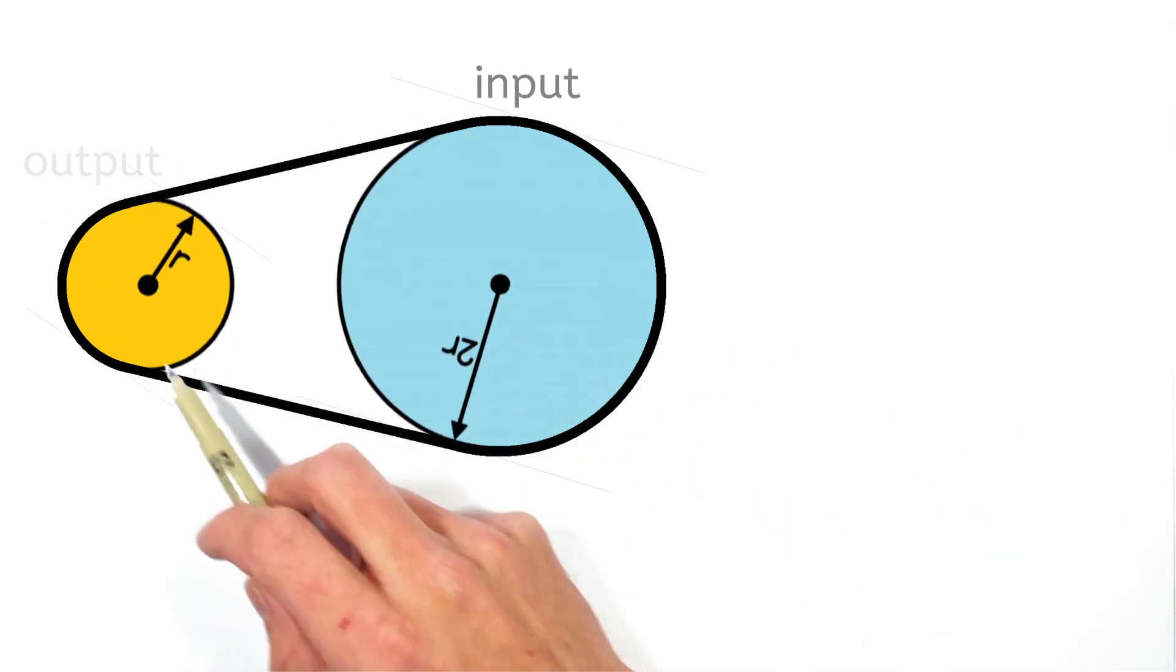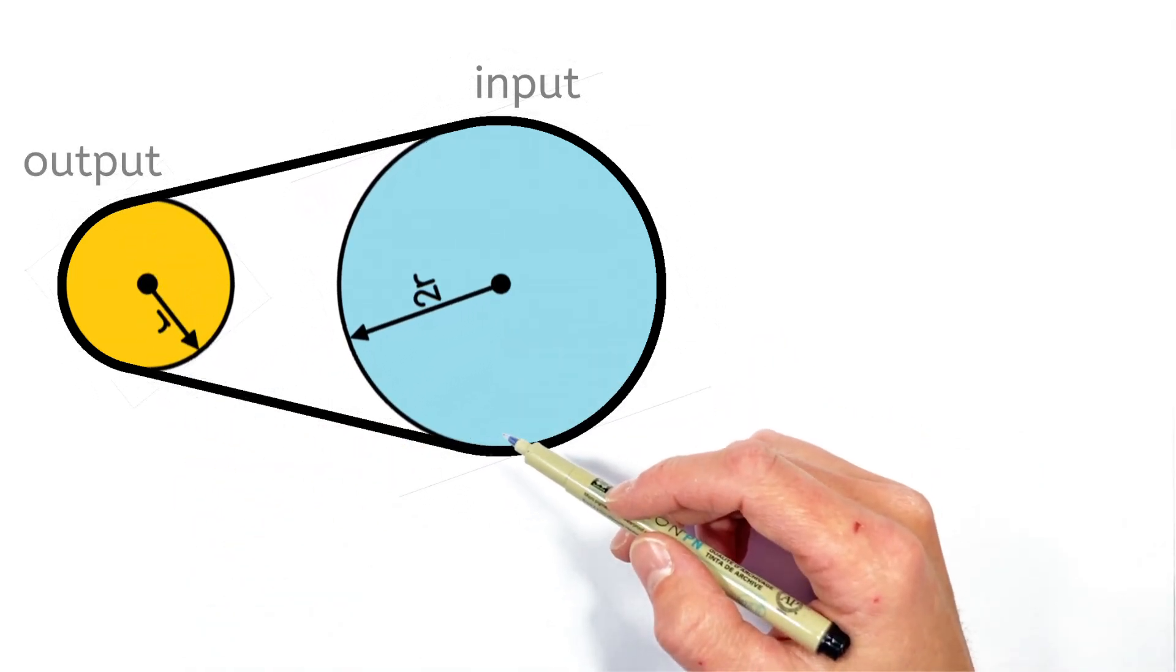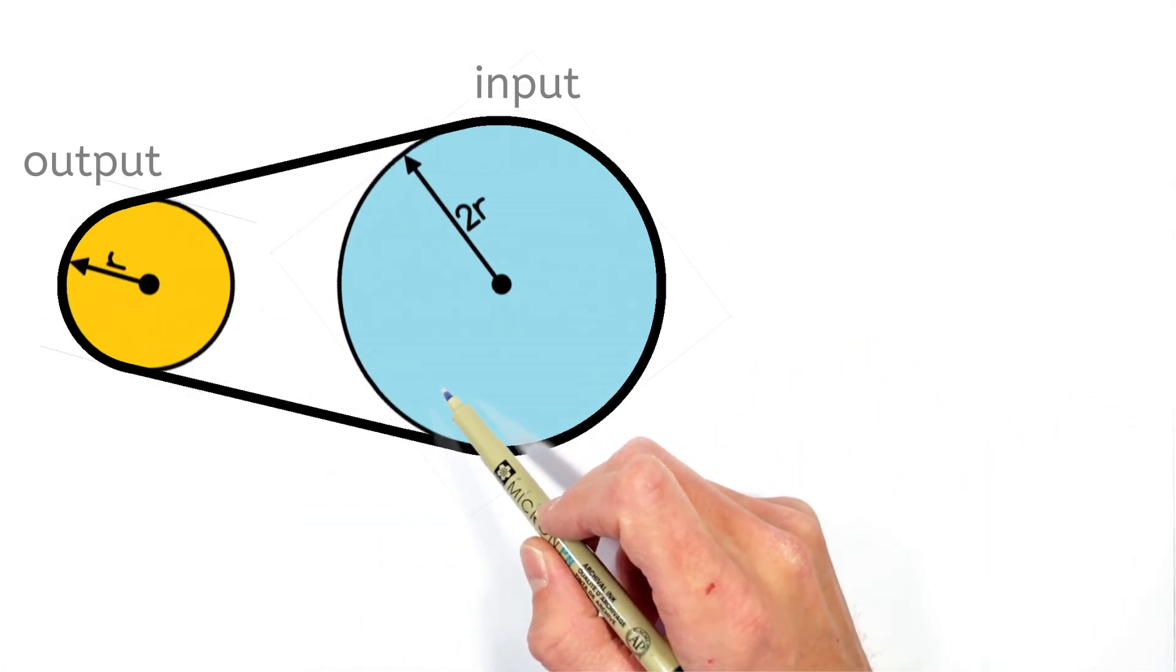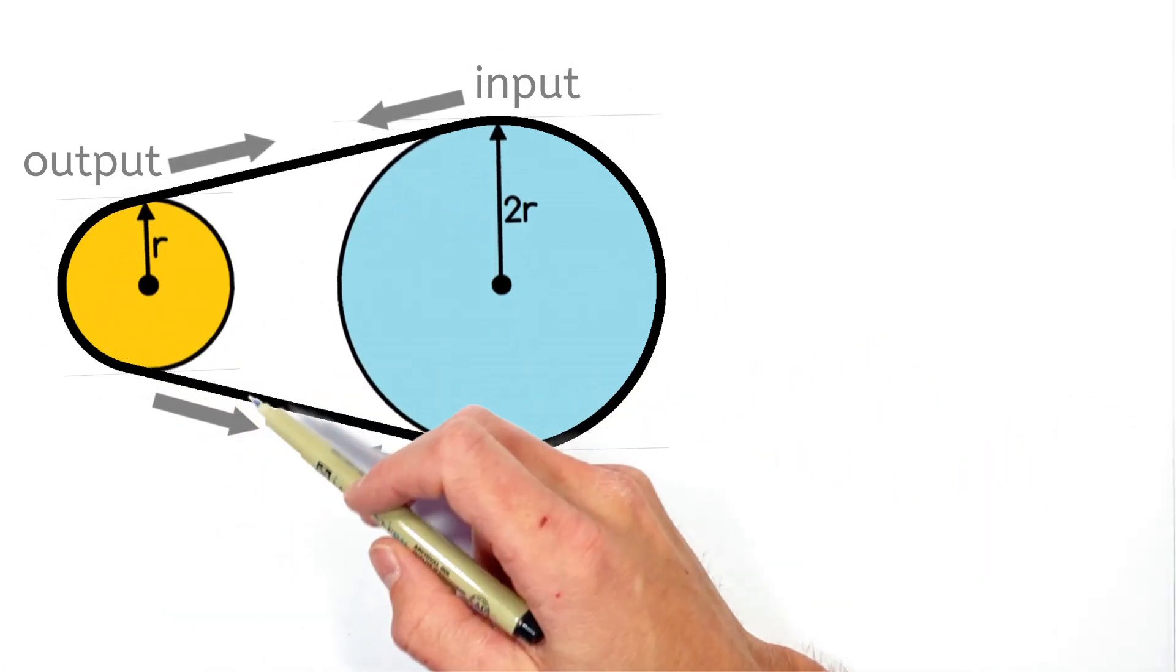So this assembly consists of an input shaft and pulley, which are connected to an output pulley and shaft by a belt. And the idea being the belt's responsible for transferring force between the input and output pulleys.